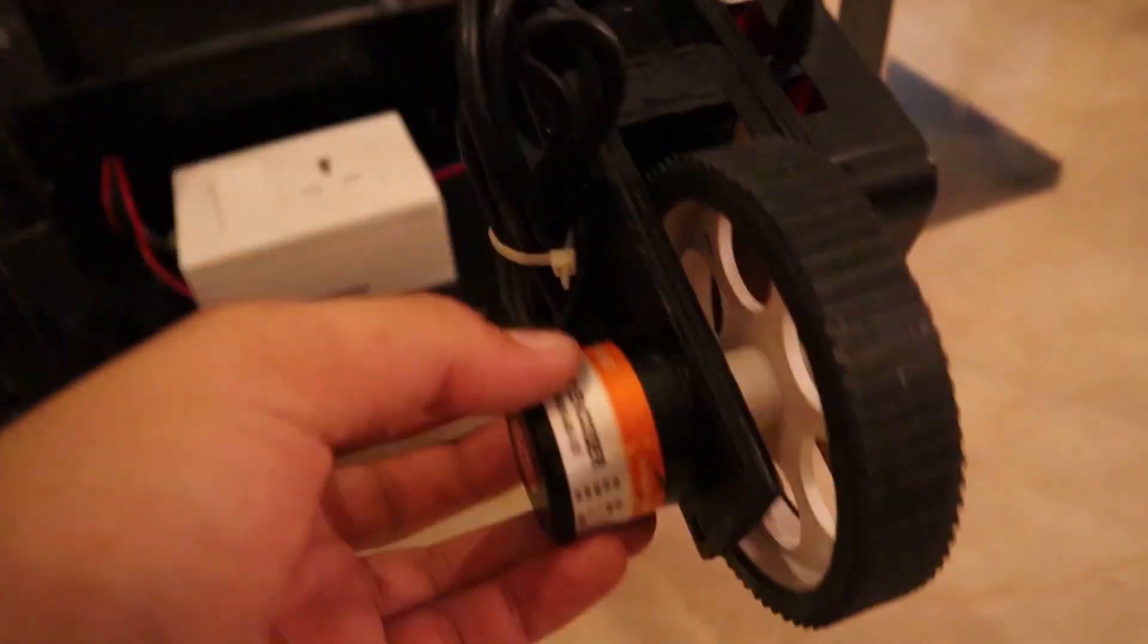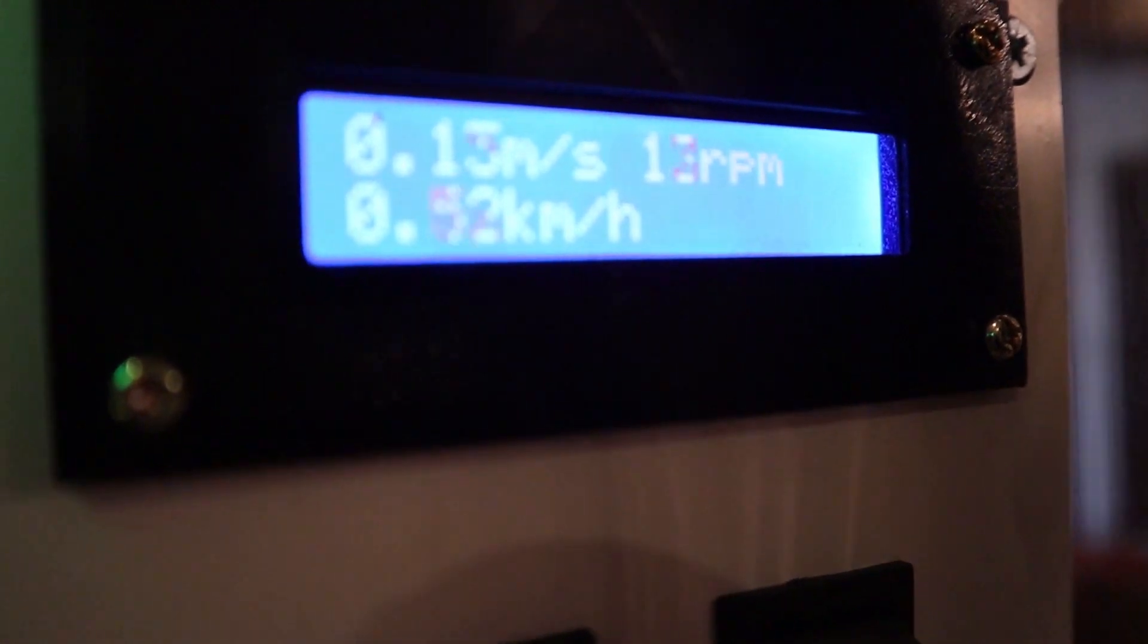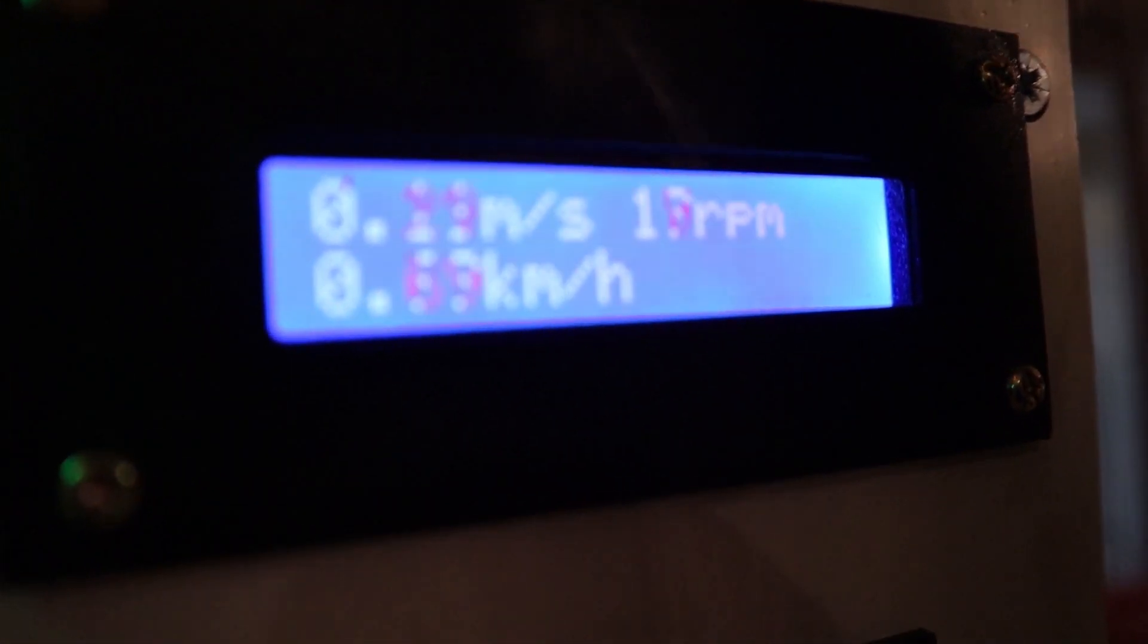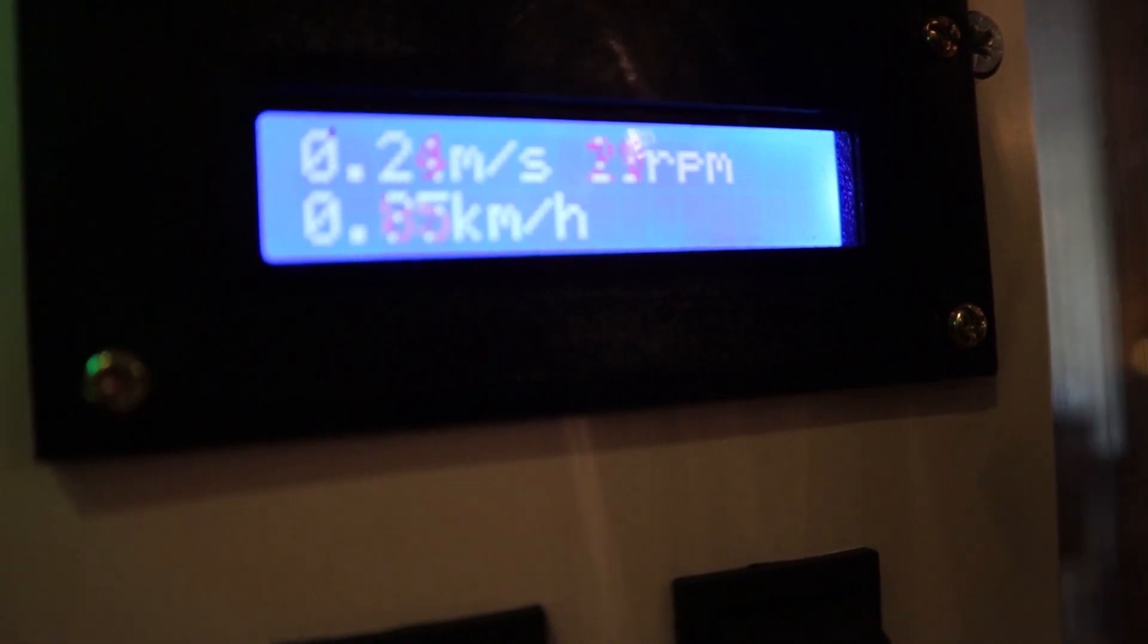The wheel at the back flips out and uses an encoder from an Otis elevator to tell me up here on this display how fast I'm going. I've even programmed the encoder to tell you what speed to go at for different distances of UV exposure.